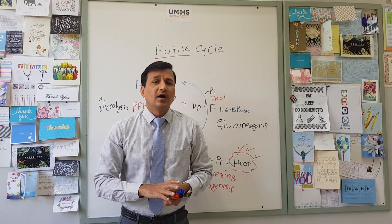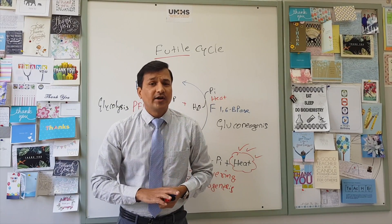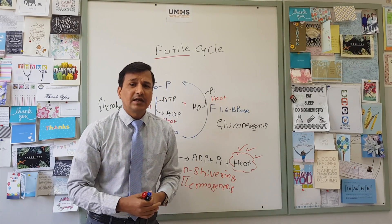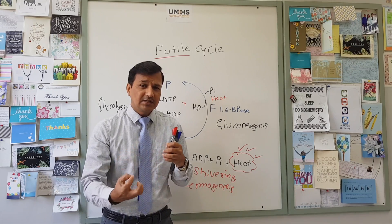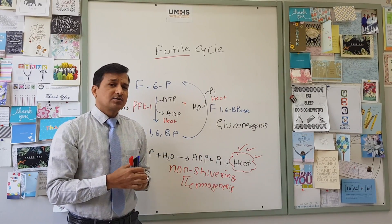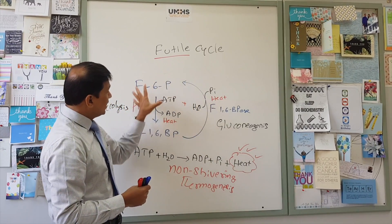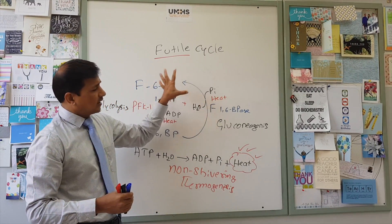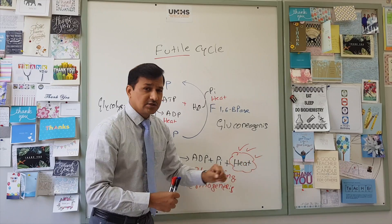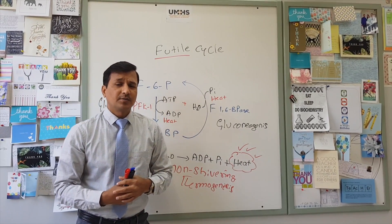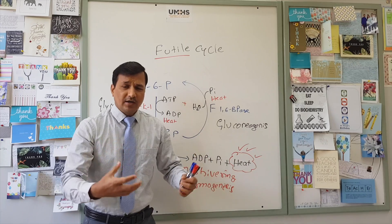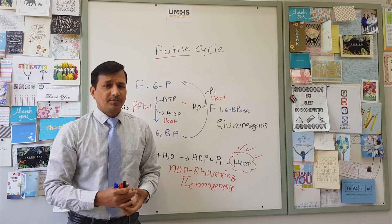Also in hyperthyroidism — in hyperthyroidism, there is more and more T3 and T4 synthesized. T3 and T4 uncouple the electron transport chain process, and they also run this kind of futile cycle, thereby generating more and more heat. So a patient with hyperthyroidism will have an increased body temperature.